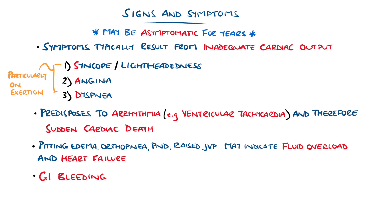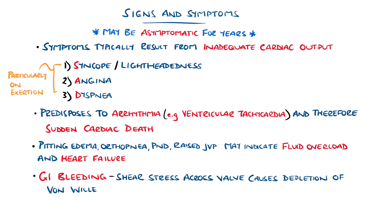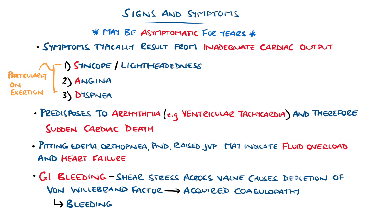Interestingly, these patients can be prone to gastrointestinal bleeding, as the high shear stress across the aortic valve can activate and use up von Willebrand factor, leading to a relative deficiency of it and causing an acquired coagulopathy. This can lead to bleeding in patients with angiodysplasia of the gastrointestinal tract, termed Heyde's syndrome.